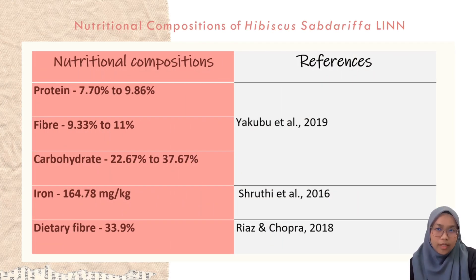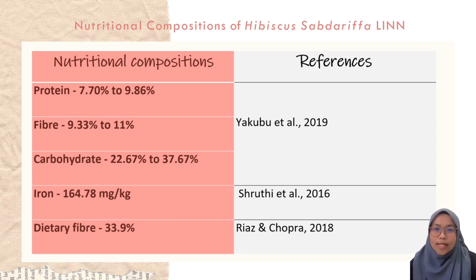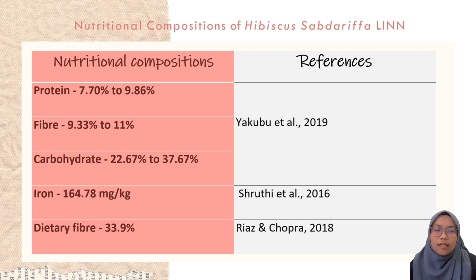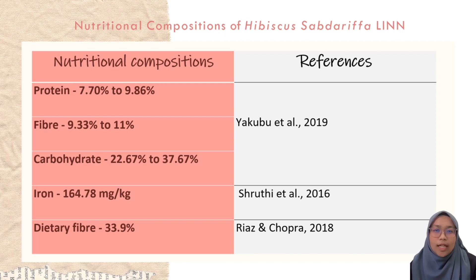Let's move on to the nutritional composition of Hibiscus sabdariffa. According to Yakubu, there are 7.7% to 9.86% of protein, 9.3% to 11% of fiber, and 22.67% to 37.67% of carbohydrate in Roselle extract. In another finding by Shruti, there was iron around 164.78 mg per kg. Meanwhile, Ria Senchopra mentioned that 33.9% of dietary fiber can be found in the Roselle extract.